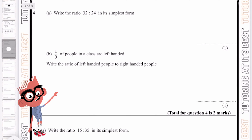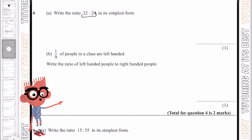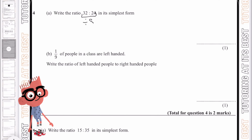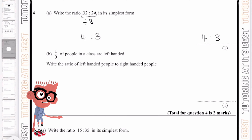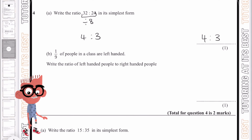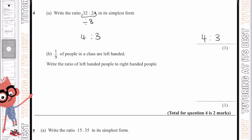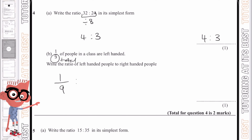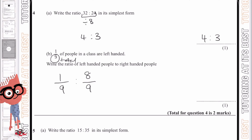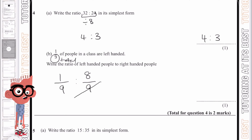Okay, question number four. Write the ratio of 32 to 24 in its simplest form. We need to find the highest common factor, which in this case is 8. So we divide both sides by 8: 32 divided by 8 gives us 4, and 24 divided by 8 gives us 3. So the answer is 4 to 3. Part b states that 1 ninth of people in the class are left-handed — write the ratio of left-handed to right-handed people. The total is 9, so if 1 over 9 are left-handed, then 8 over 9 must be right-handed, because 8 plus 1 gives us 9. Therefore, the ratio is 1 to 8.